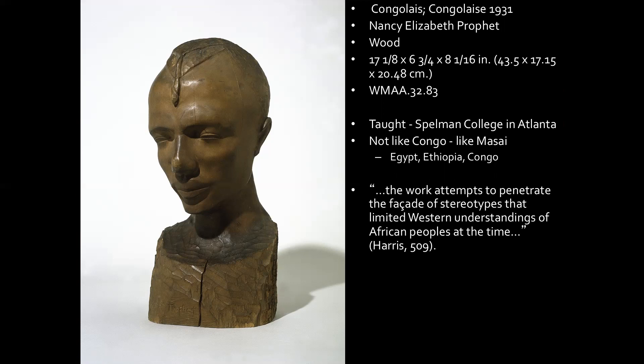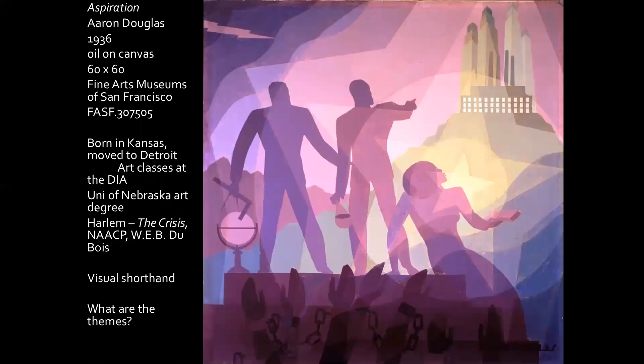Working in a white supremacist environment, people didn't have direct access to the information needed to correctly attribute these works. However, what Prophet is doing, according to Harris, is that the work attempts to penetrate the facade of stereotypes that limited Western understanding of African peoples at the time. She created a sculpture working very much in a Western tradition — like what you'd see showing ideal male or female beauty that also represents what it means to be a good human being, perfection, humanism. Even without accurate cultural information, she's lifting Black people by creating this image in opposition to the racist imagery coming from most institutions and the white supremacist society of the United States.